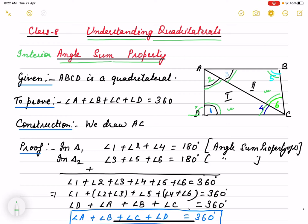We are going to take help of angle sum property of a triangle, which we have already done. That angle sum of a triangle is 180 degrees.